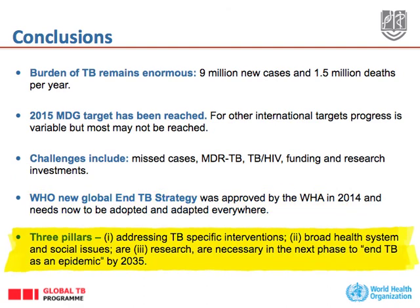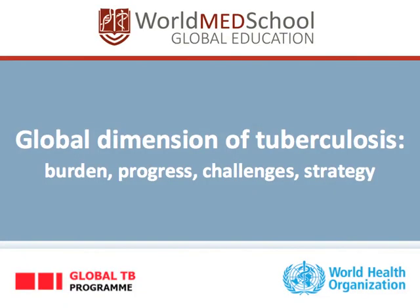And finally, this strategy consists of three pillars: addressing TB-specific interventions, addressing the health system and social issues, and intensifying research. This is all that is necessary in order to end TB as an epidemic by 2035. Thank you very much for listening.